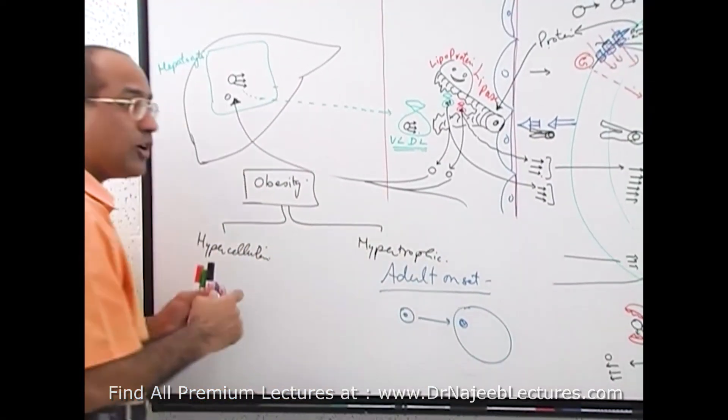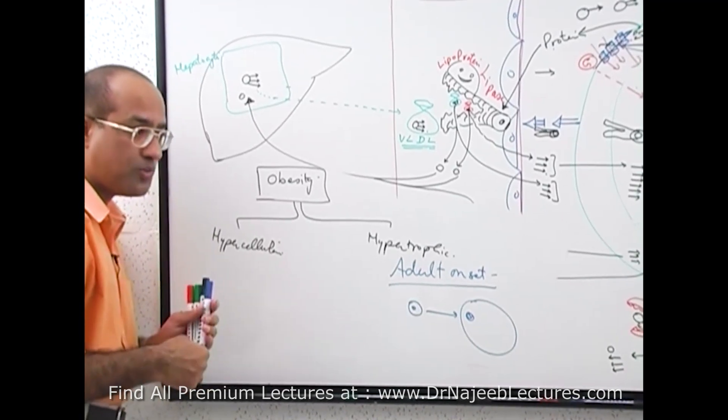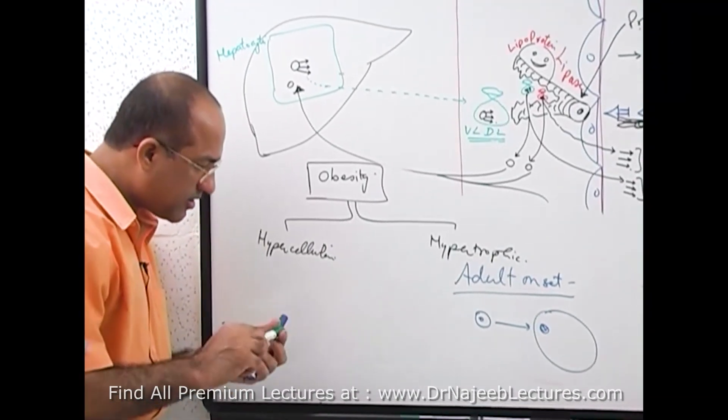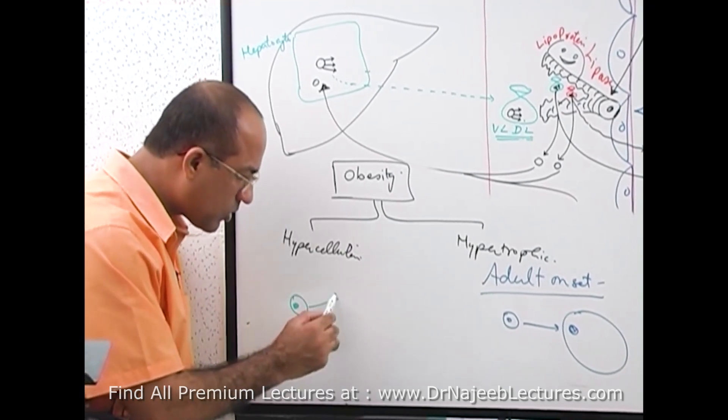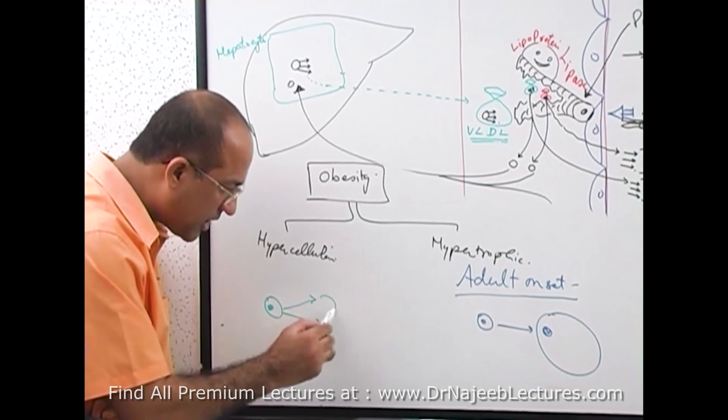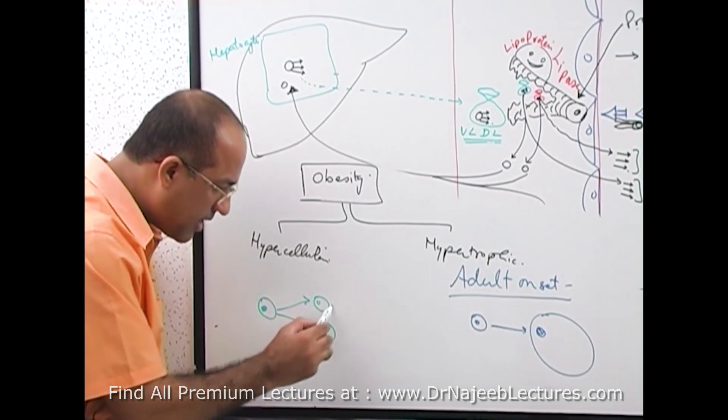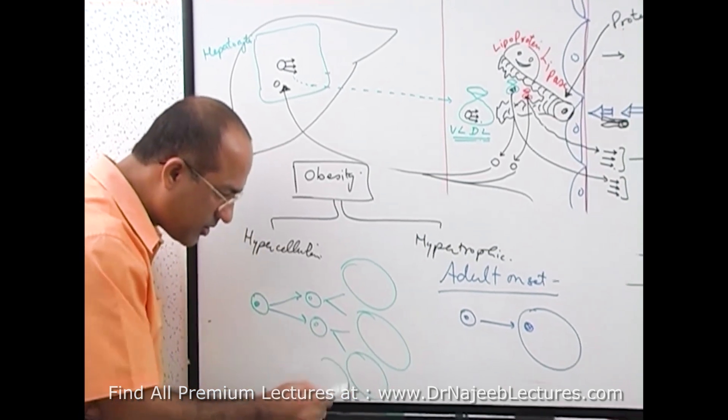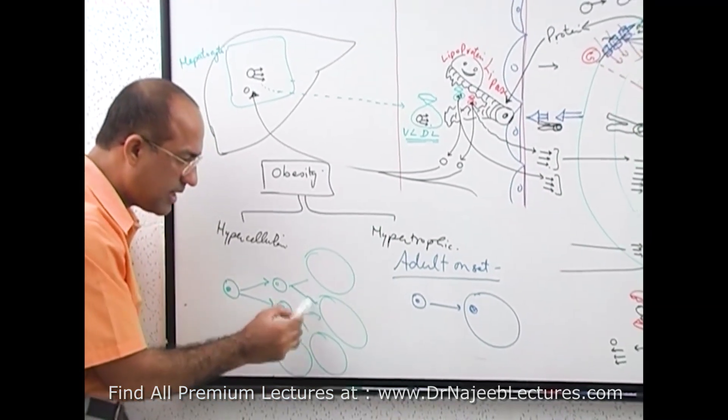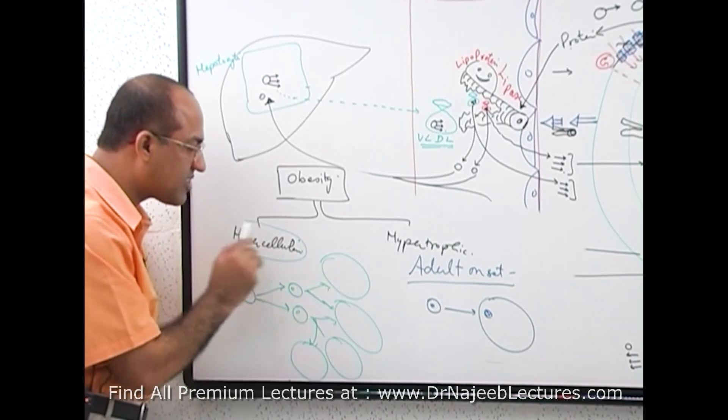But in early onset, child onset obesity is basically there is a small fat cell, if you are overfeeding, not only this cell will first multiply into many cells and eventually they will become very large.